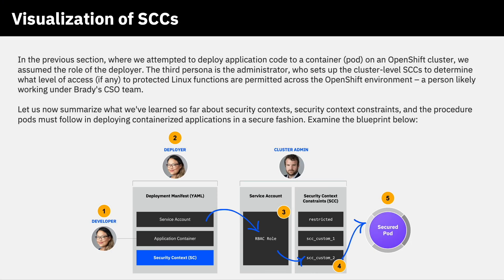We'll dig into how to set those roles and groups up yourself later on in this hands-on material. SCCs defined by Brady's team, as well as default SCCs available out of the box with a standard OpenShift deployment, are compared against the requested SCs of the deploying pod on bullet four. And finally, on bullet five, if the requested SCs are within the permitted boundaries of the defined SCCs, the SCCs will grant permissions to that pod to be deployed, and the containerized application will be pushed into a live production state on the OpenShift cluster with access to those permitted and protected Linux functions that were requested as part of the deployment manifest.